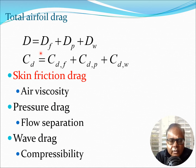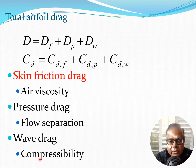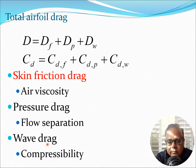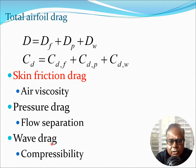The total drag on the airfoil is given by three components: skin friction drag, pressure drag, and wave drag which comes from compressibility effects. Skin friction drag comes from the viscosity of the air and is directly proportional to the shear stresses in the boundary layer. Pressure drag comes from flow separation. Wave drag arises from shock waves which cause pressure differentials leading to drag.